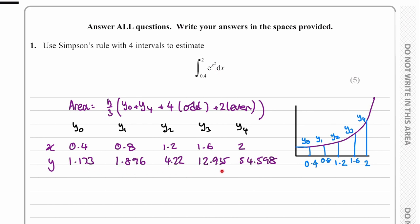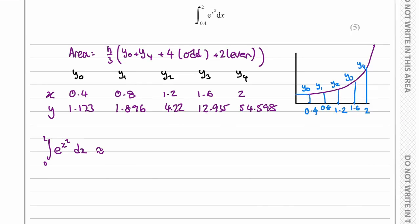That will give us each of these to three decimal places. Now we can substitute these into our equation, and we'll get the integral of e to the x squared between 0 to 2 as approximately...